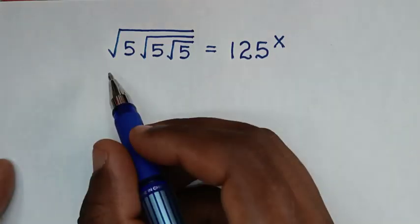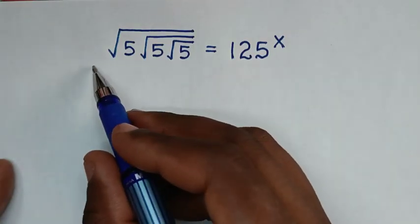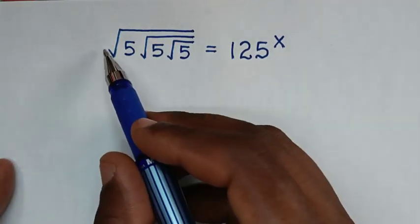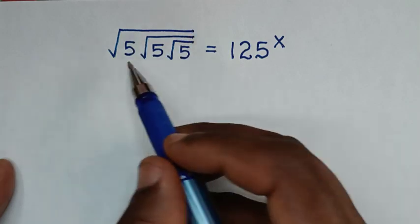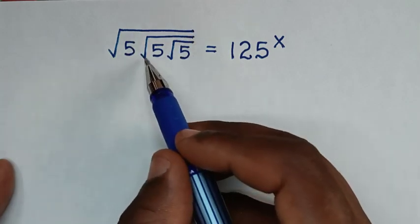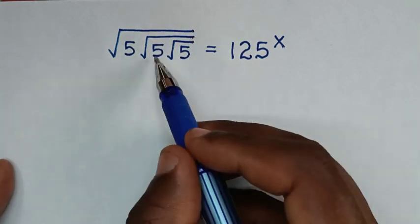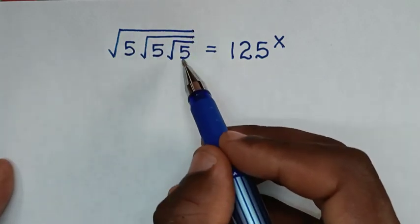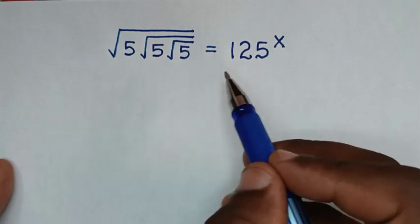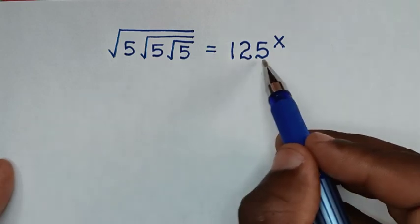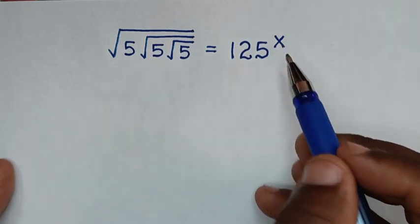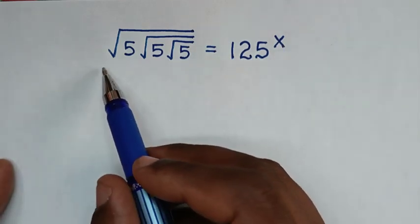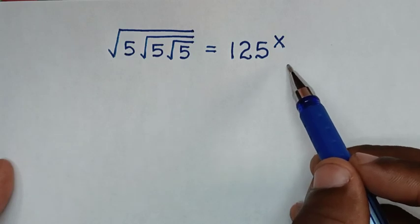Hello, you are welcome to solve this math problem: the square root of 5 under square root of 5 under square root of 5 equals 125 to the power of x. We need to find the value of x from this equation.